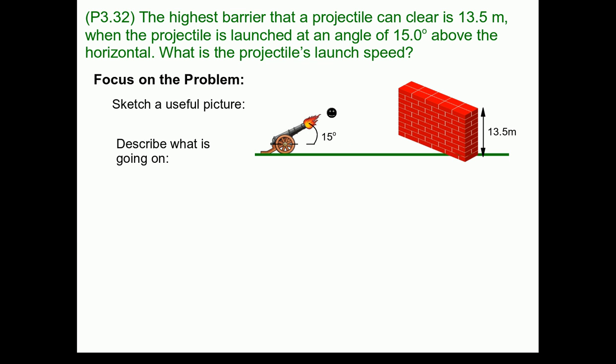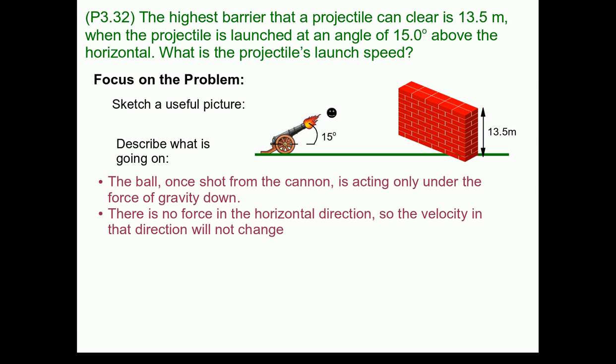So now let's move on to describe what's going on in this particular problem in words. The ball, once it's shot from the cannon, is acting only under the force of gravity, which is pulling it straight down. There are no forces acting in the horizontal direction, so the velocity in that direction will not change.